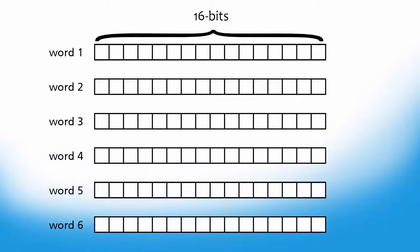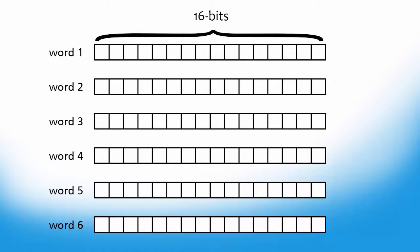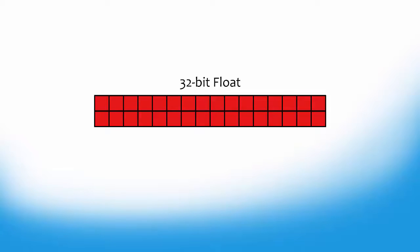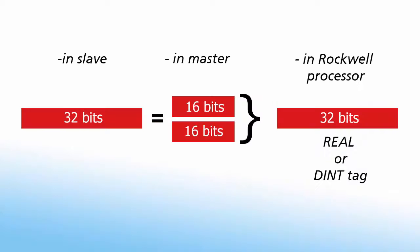This presents a small complication since the internal memory of ProSoft modules are comprised of 16-bit word addresses. The solution is to break the 32-bit value into two separate 16-bit registers and then recombine them back into a 32-bit real value. This is accomplished by copying the two 16-bit registers to one real tag in the Rockwell processor.